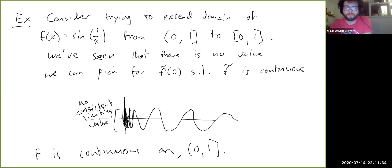So you might think that, okay, obviously you're not going to be able to extend this function because it's oscillating infinitely fast near 0. And that's sort of true. That is actually a fair way to characterize what's going on here.